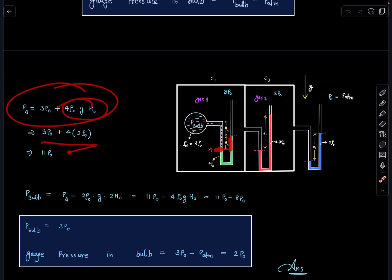And if you substitute the value we are getting 11p naught here. After this against gravity we are going, so pressure here is going to be decreasing. So pressure at the bulb here I can say is the same pressure. So pressure at the bulb is p_a minus 2 rho naught g into 2 h naught.